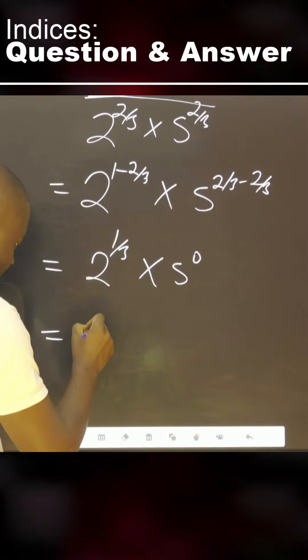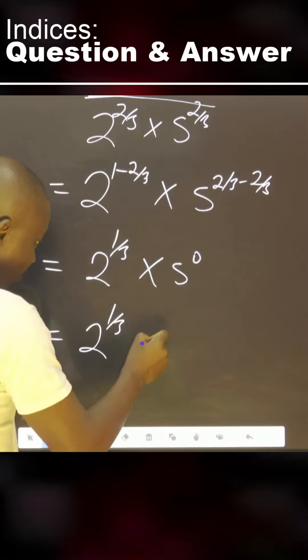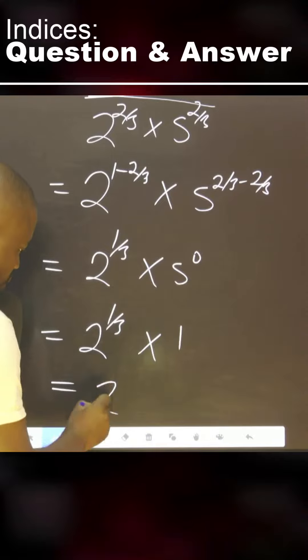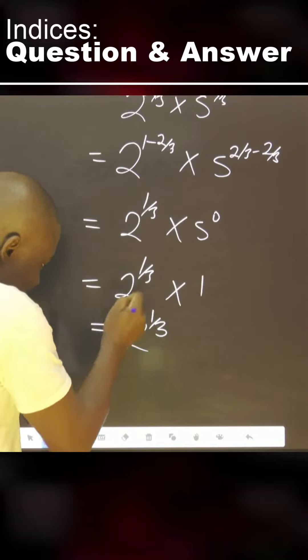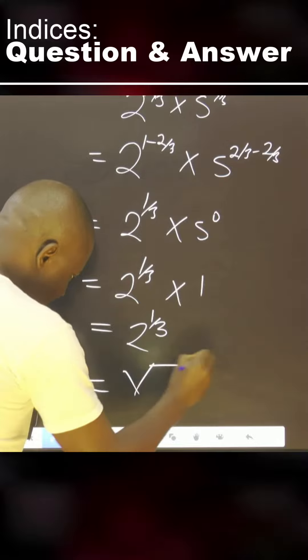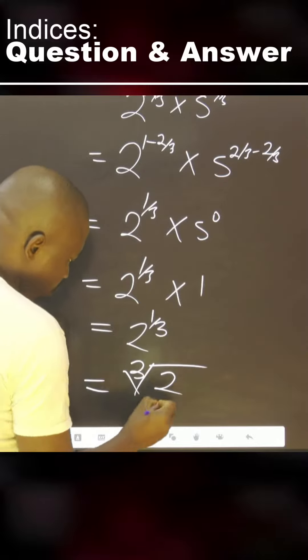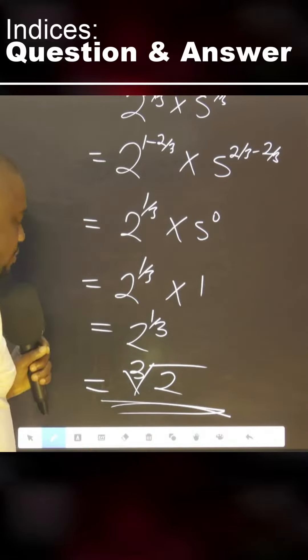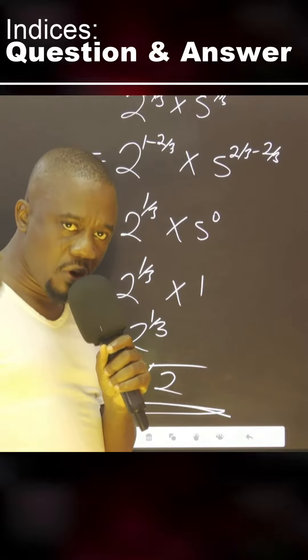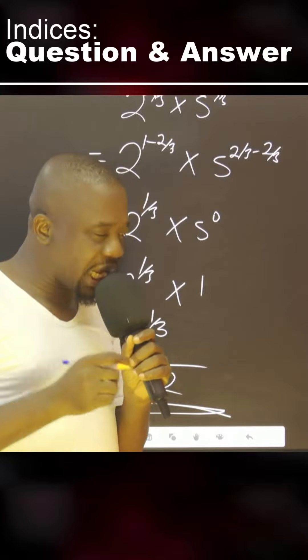That is to say, 2 to the 1 over 3, multiplied by 1, equals 2 raised to the power 1 over 3. This is the cube root of 2. We explain all this. If you missed the class, go and check the previous classes.